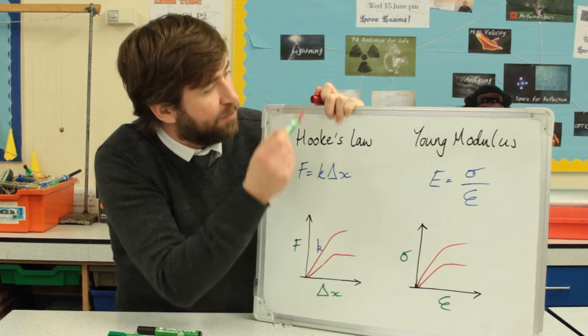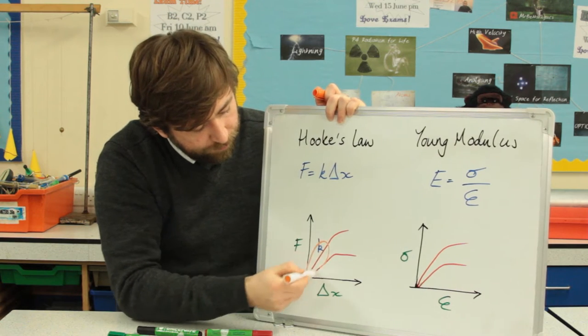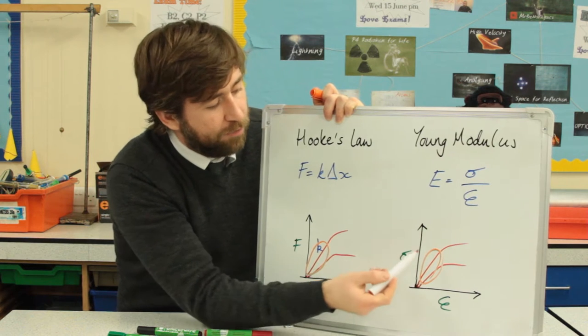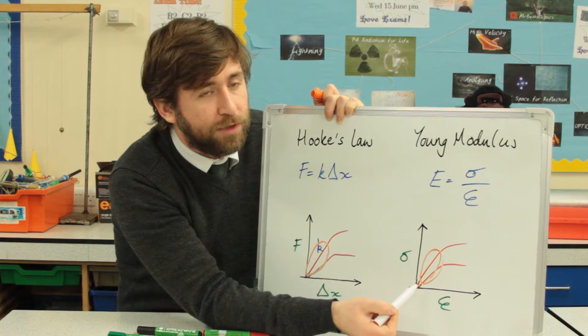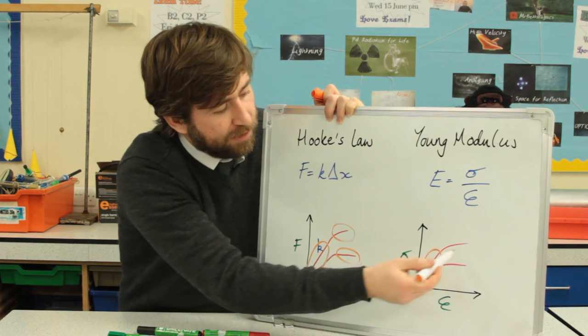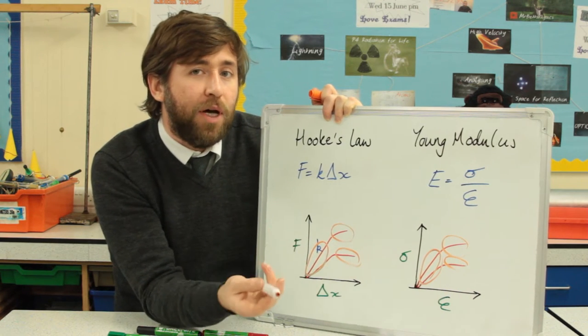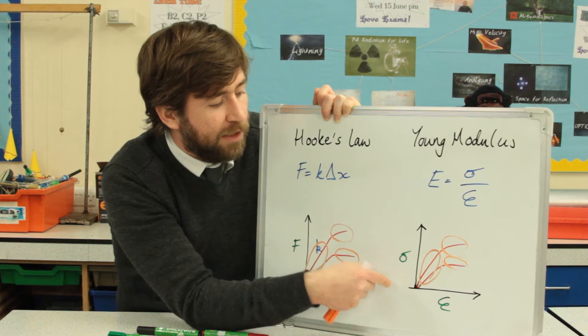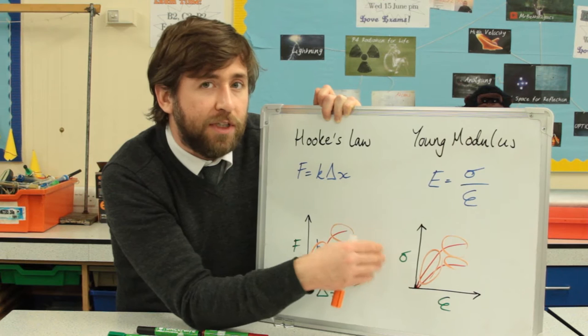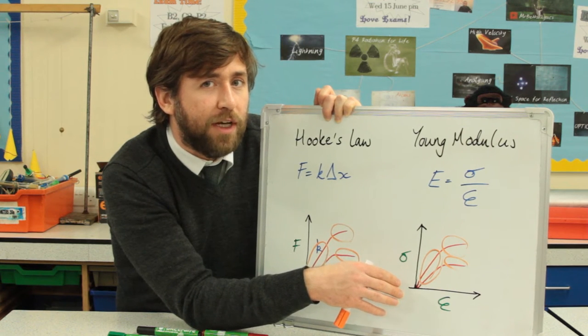And still, this is the case where this is the elastic region, the proportional section. This is still the elastic region for the material, the region at which it will return to its original shape. It showed elastic behaviour, and this is still the plastic region, these latter parts here, where it is deforming plastically, that means it's a permanent change. You need to link the different shapes of graph for Young Modulus to the different material properties that you need to know and have a really good definition for in your A-level physics.